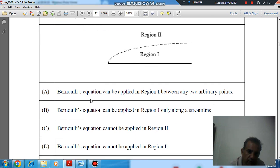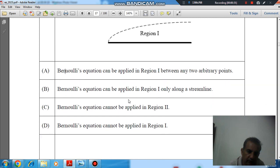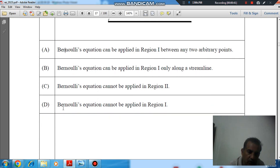Option A: Bernoulli's equation can be applied in region 1 between any two arbitrary points. Option B: Bernoulli's equation can be applied in region 1 only along a streamline. Option C: Bernoulli's equation cannot be applied in region 2.